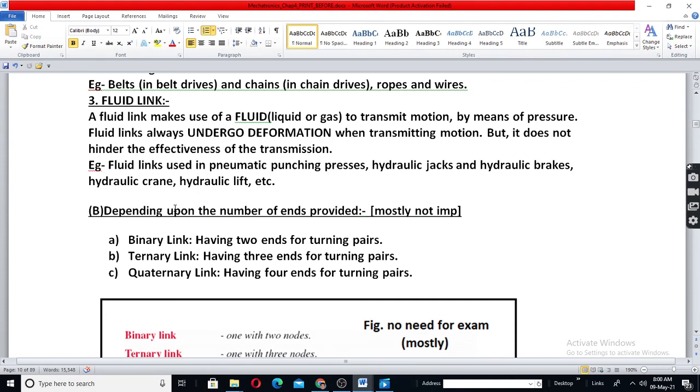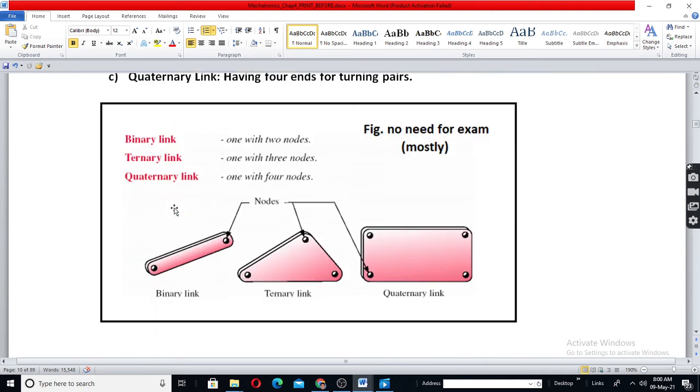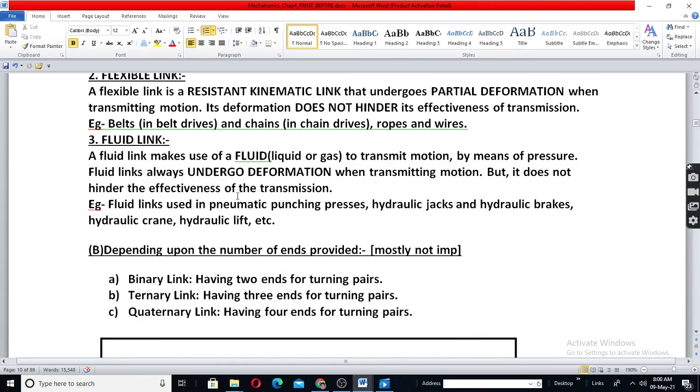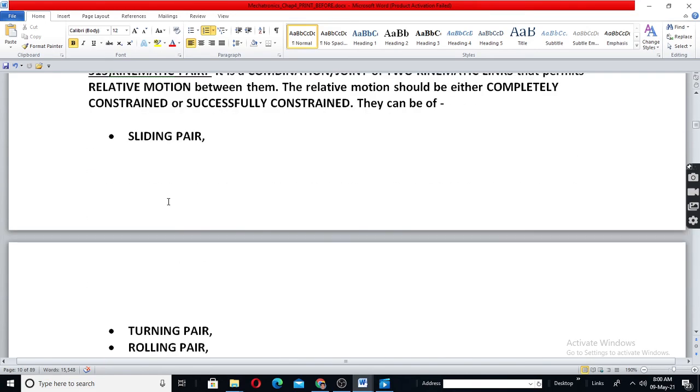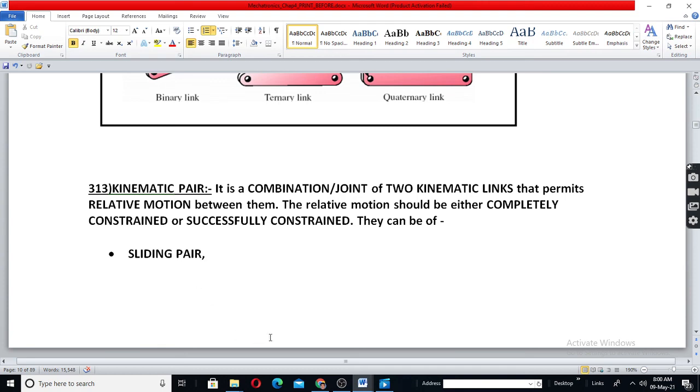Again, there is classification depending upon the number of points given in a link. If in a link, there are only two nodes. A link should have at least two. One to receive, one to drive, another is driven. If it is only one, it cannot transmit motion. So if it has two points, two ends, two nodes, it is binary. Three, ternary. Four, quaternary. Not sure whether this is important for you, but this is important. This is kinematic link.